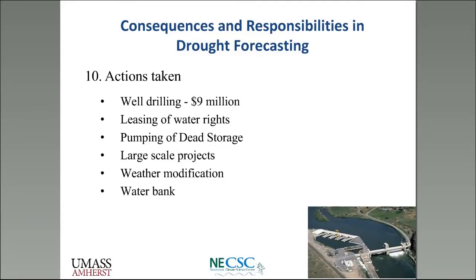That created a lot of actions. Those anticipating prorated water began drilling wells — groundwater at that point was unmanaged in the state, so you could take as much as you wanted. People began leasing water rights from one another, discussing pumping dead storage from reservoirs, and even setting up cloud seeding planes. A very early attempt at a water bank was established to help move water from one user to another.